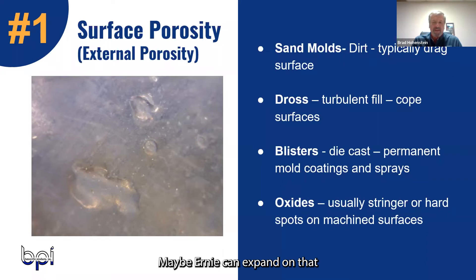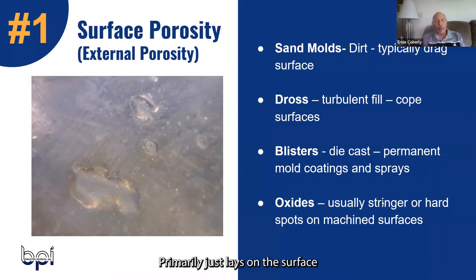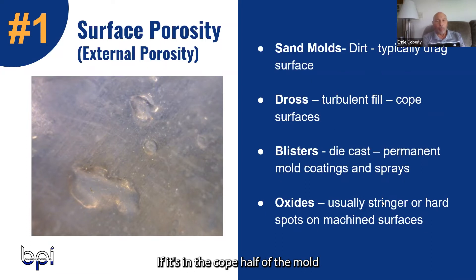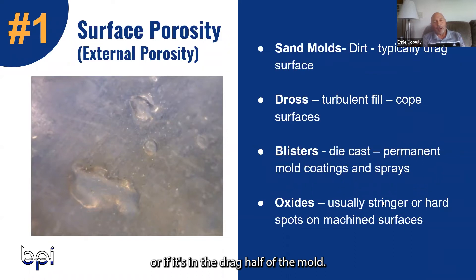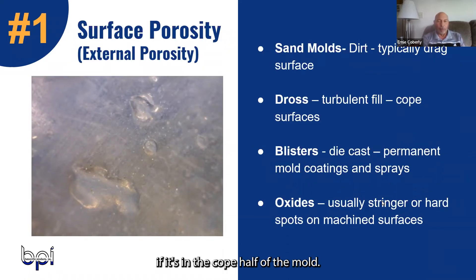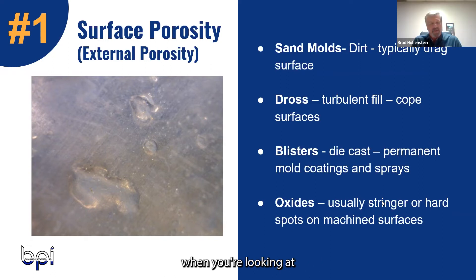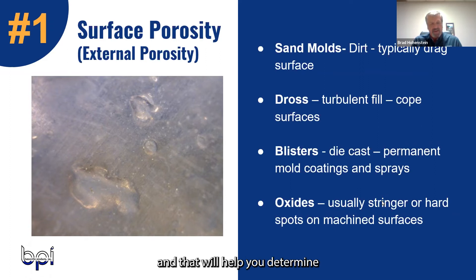Maybe Ernie can expand on that a little bit. It primarily just lays on the surface. In sand molds, it tends to be dirt if it's in the drag half of the mold, or a drawback if it's in the cope half of the mold. Ernie brings up a good point — when you're looking at porosity, look at the location and that will help you determine what kind of porosity it is.